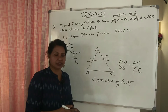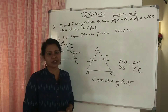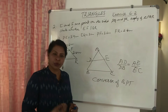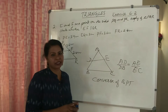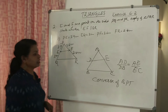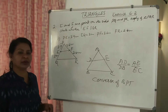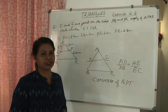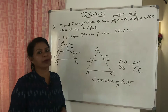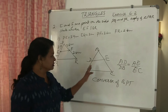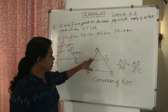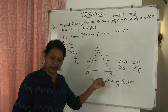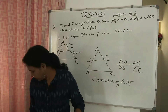We will learn the Converse of BPT and its proof. The Converse of BPT states that if the two sides of a triangle are divided in the same proportion, then the line joining those points will be parallel to the third side. So if the two sides are proportional, the line is parallel.